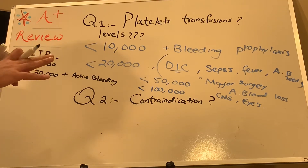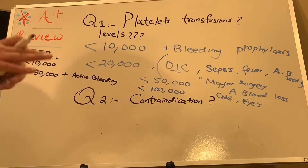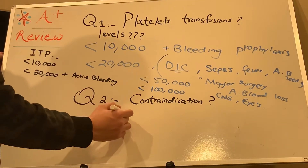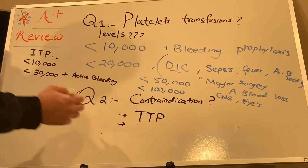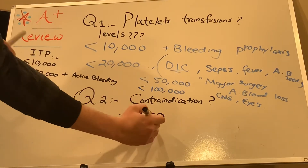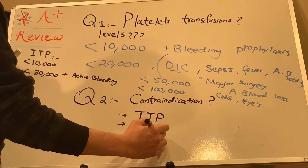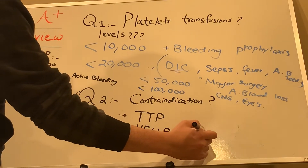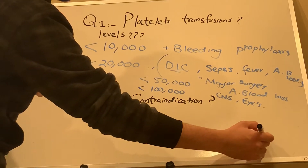Now, what are the contraindications? What are the conditions where we cannot give platelets? So there is TTP — thrombotic thrombocytopenic purpura — and we have HELLP syndrome, which is often associated with preeclampsia and eclampsia.